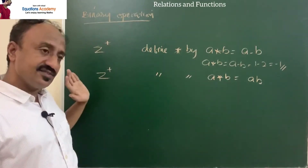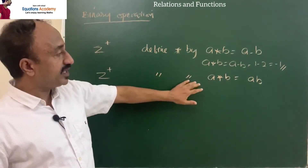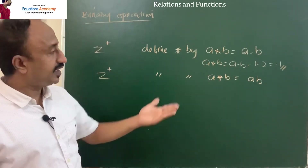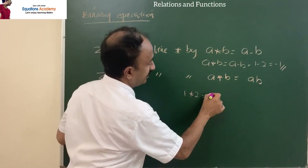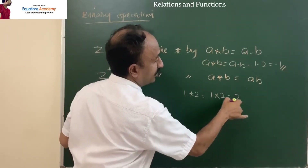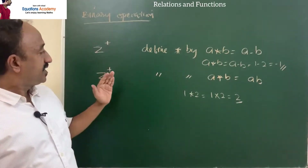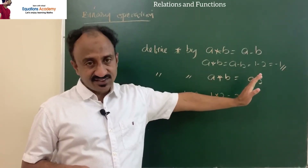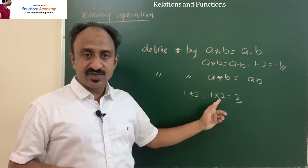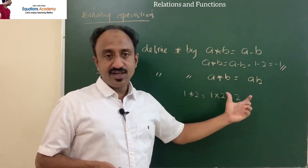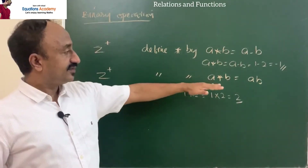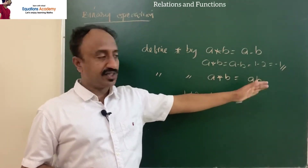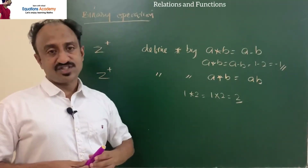Second question: on ℤ+, define a★b = ab (product). Take 1 and 2: 1★2 = 1×2 = 2. Since 2 belongs to ℤ+, multiplication is a binary operation on the set of positive integers.